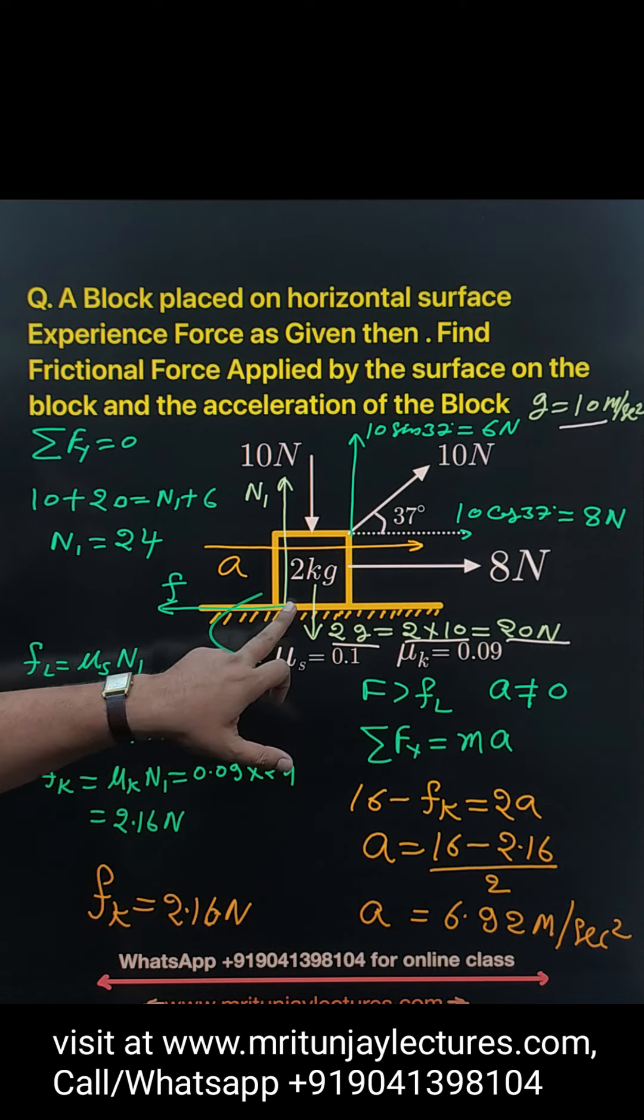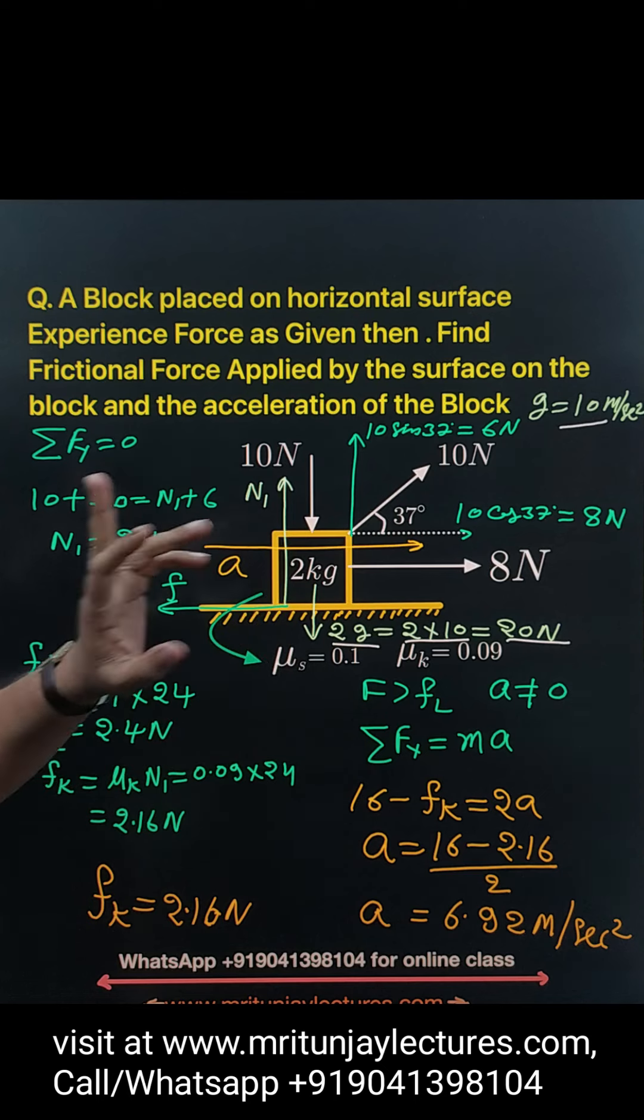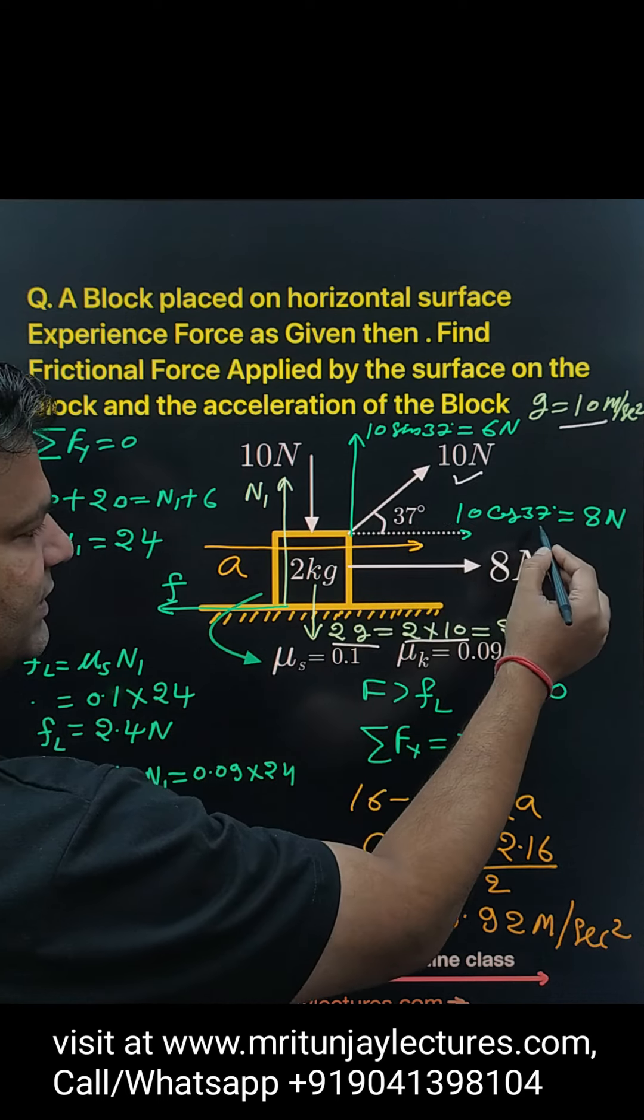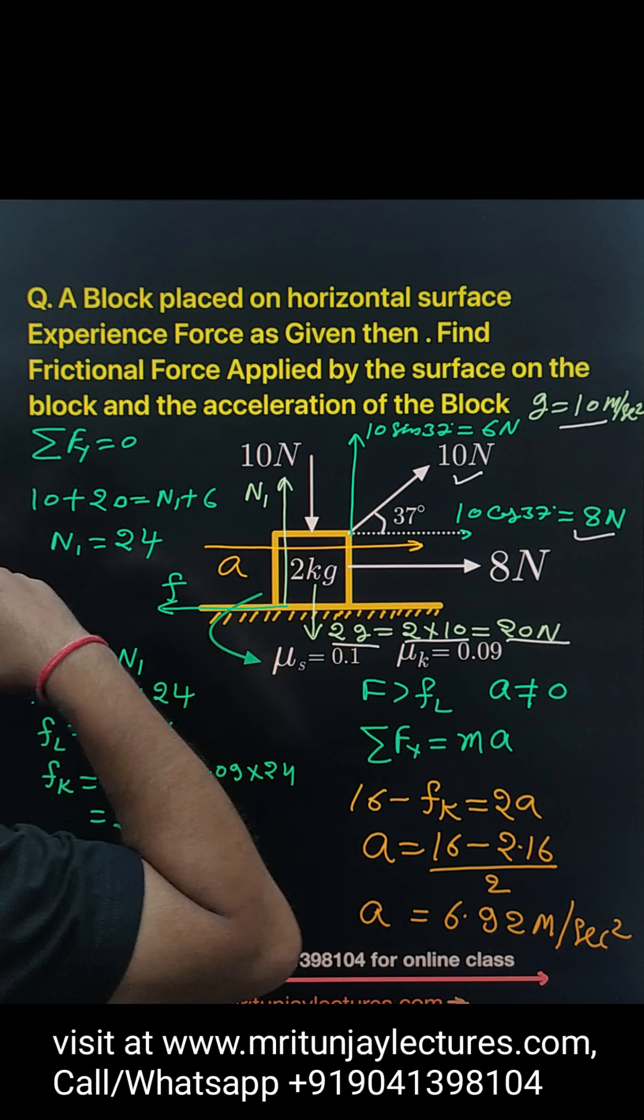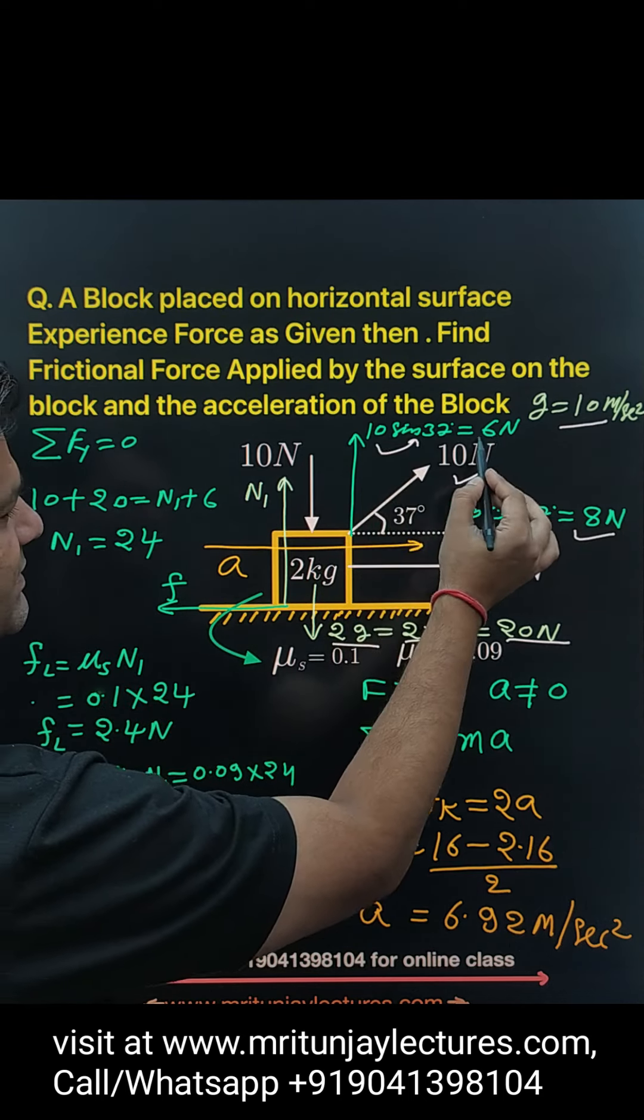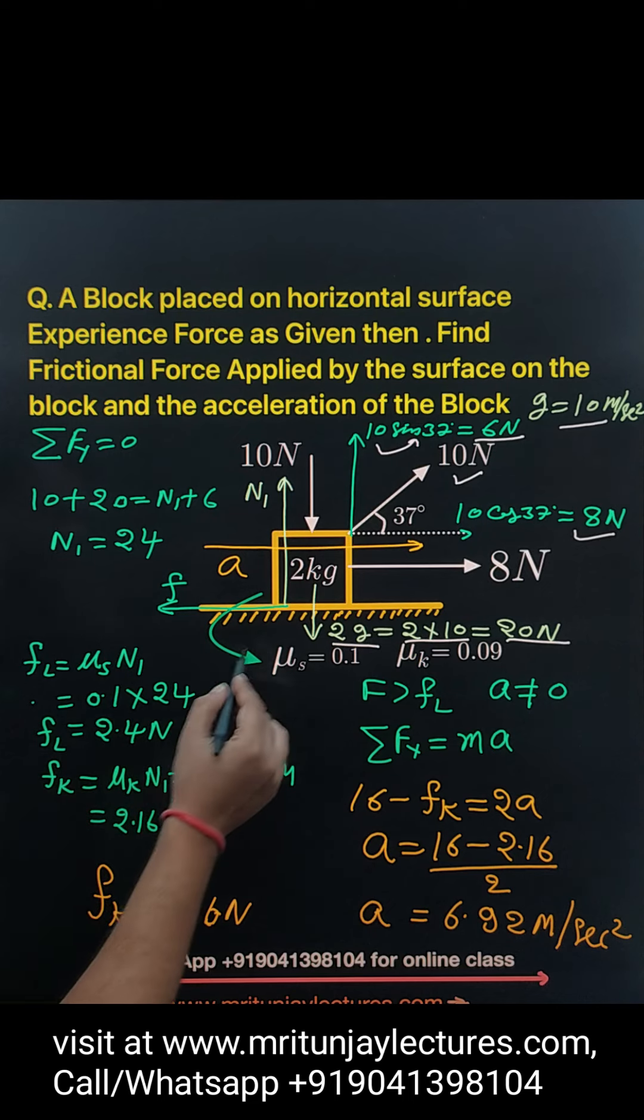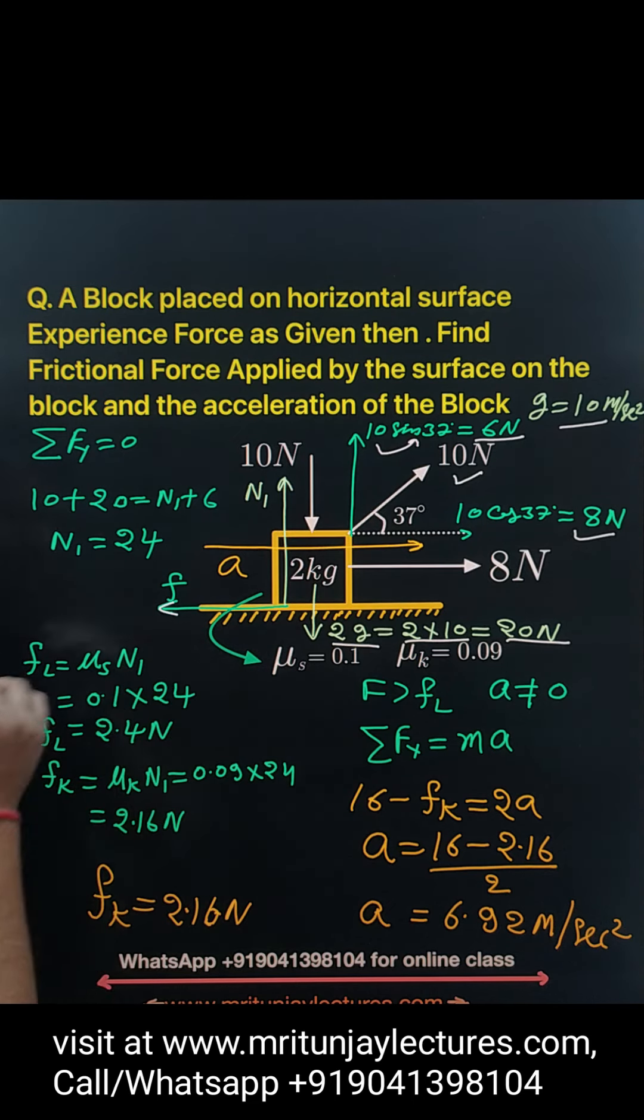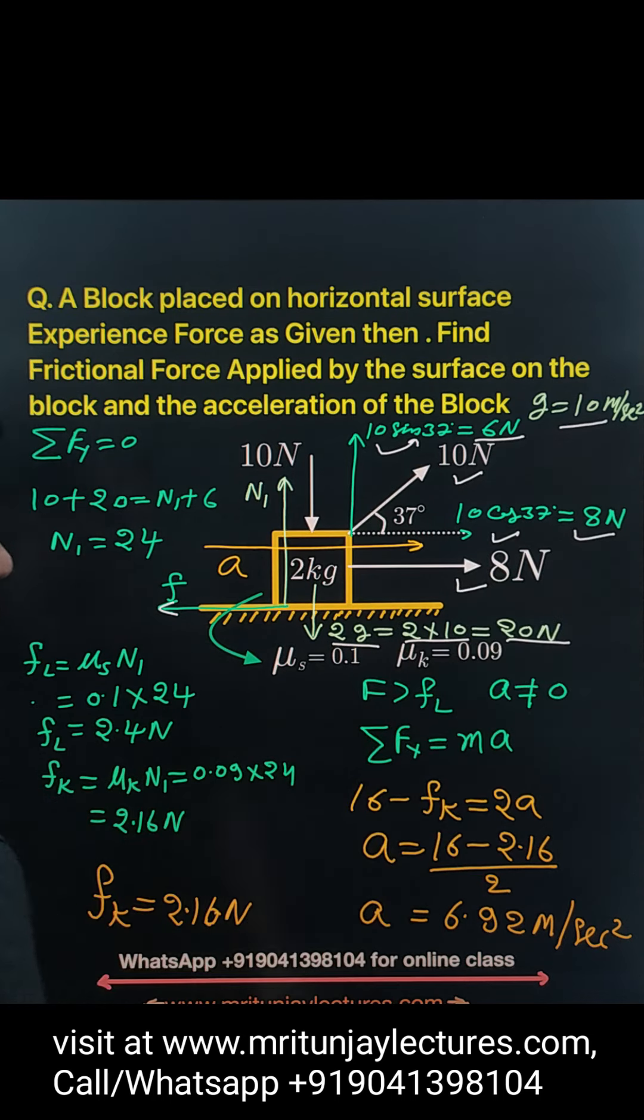Normal force applied by surface on the block is N1, always in perpendicular direction. Component of 10 Newton in horizontal direction is 8: 10 cos 37 equals 8, and 10 sin 37 equals 6, because sin 37 is 0.6, so 10 times 0.6 is 6 Newton. After that, frictional force acts in the opposite direction of driving force.